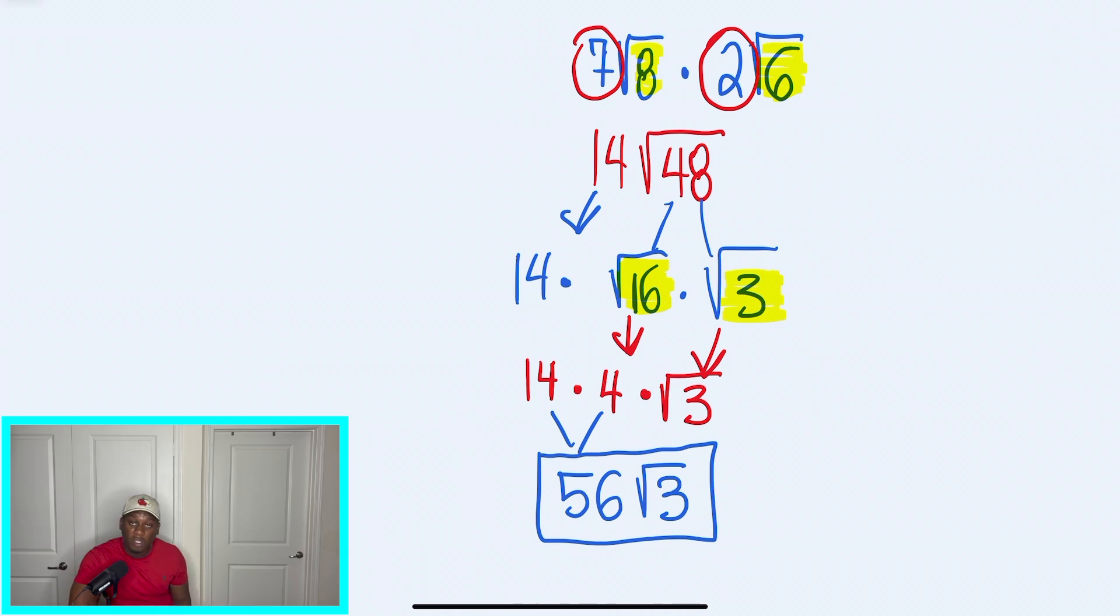So when we're multiplying square roots, don't forget three very helpful tips. We have to make sure that the root and the index for the radicals are the same. Once they're the same, we definitely can multiply. We multiply radicals with radicals, coefficients with coefficients. And then after we do that, that answer, that product that we get, we're going to see if we can break it down after.